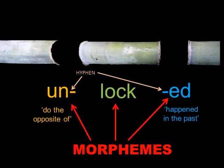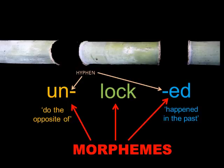These three parts of the word that have their own meanings are called morphemes. One word can be made up of several morphemes. Here, the word 'unlocked' is made of three morphemes: 'un', 'lock', and 'ed'.